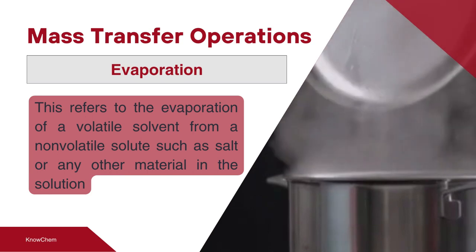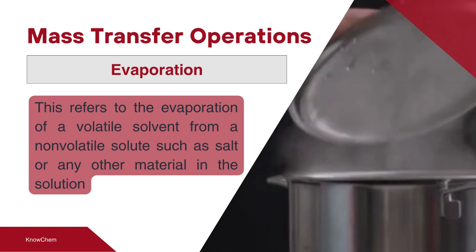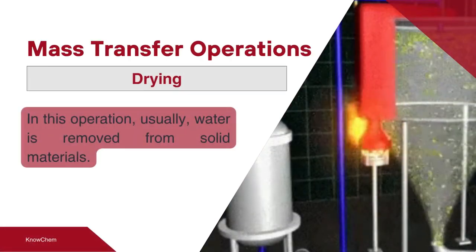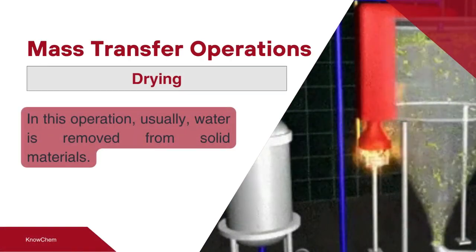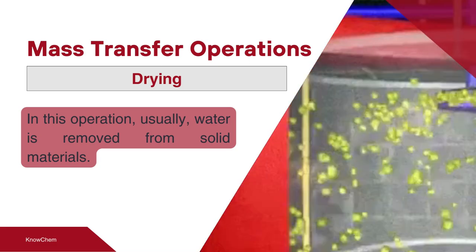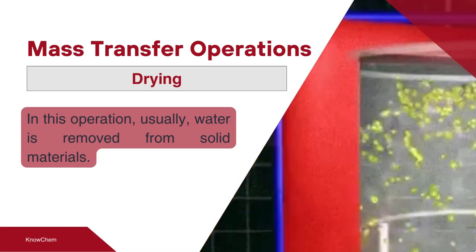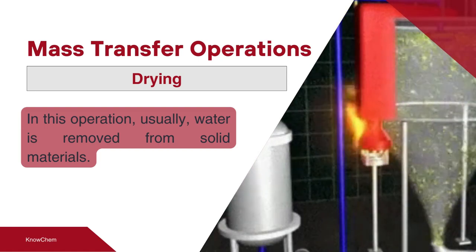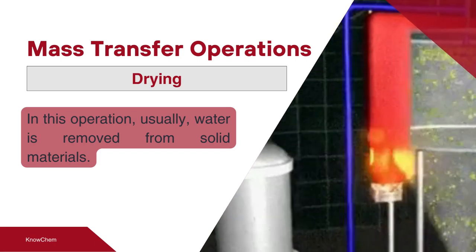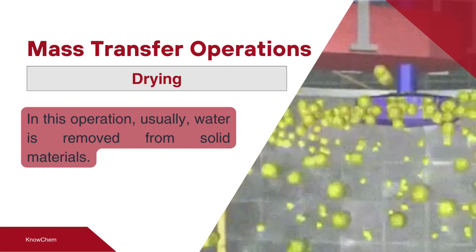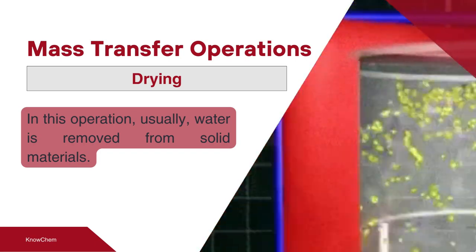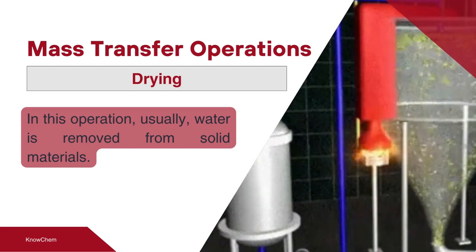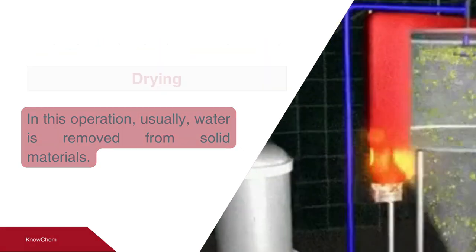When heated under controlled conditions, we can obtain water and the solute — that is, salt or sugar. Moving on to the second type of mass transfer, which is drying. Drying is widely used in our day-to-day lives and in chemical industries. It is generally used to remove moisture from the final solid product, which is essential to prevent the material from deteriorating. A simple example is wet clothes spread on a clothesline being dried as moisture is absorbed by the surrounding atmosphere.